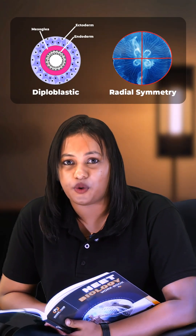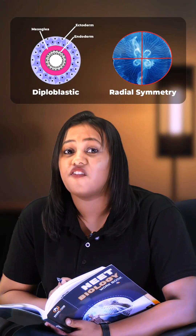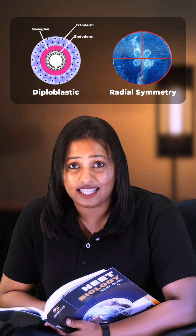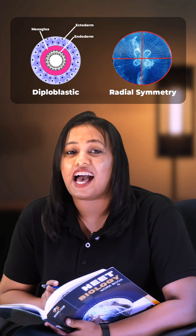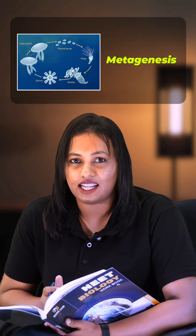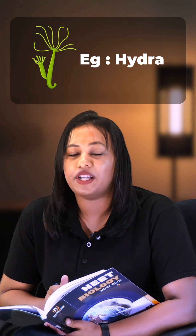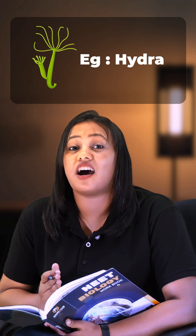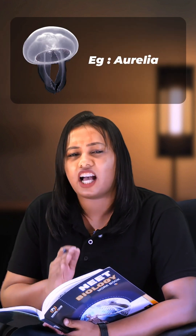They are diploblastic organisms with radial symmetry and a tissue level of organization. They exist in two forms: polyp form and medusa form. Polyp is a sessile form — example, Hydra. Medusa is a free-swimming form — example, Aurelia.